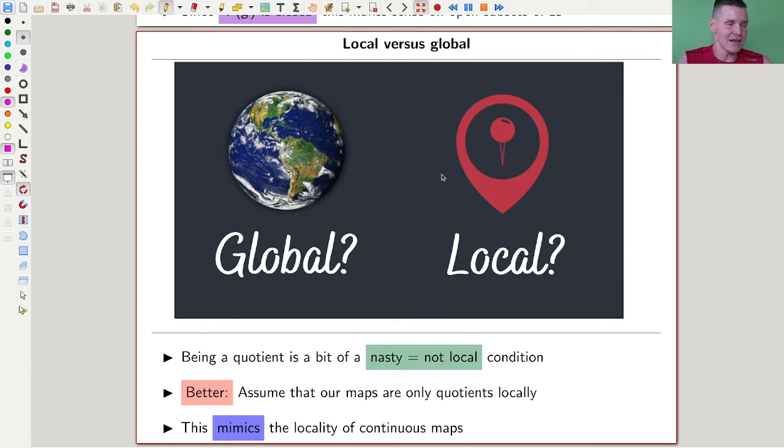That's a really good idea, and it almost gets you there. The one thing that makes it a little bit fishy is that it's a non-local condition. Being a quotient, being a rational function, is somewhat a non-local condition. It would be much nicer to have a local condition to check. This mimics the locality of continuous maps. It will look a bit strange in the definition itself, but keep in mind that this definition mimics the locality of continuous maps.